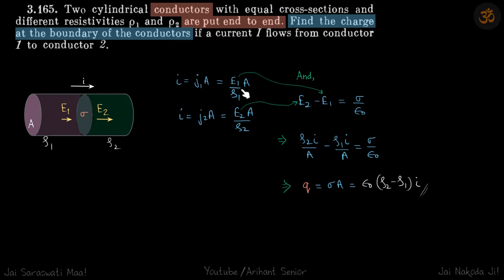So current becomes on the left side E1 by Rho1 times A. On the right side, it becomes E2 by Rho2 times A. Now these values of E1 and E2 are different. And as discussed, this difference is caused by the charge density on the boundary.